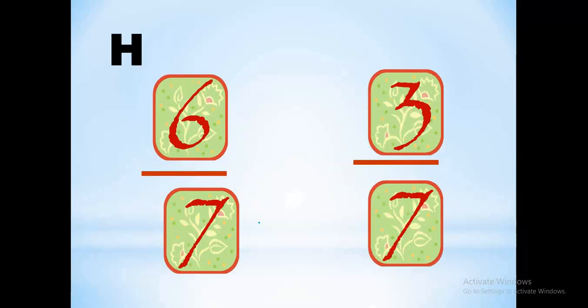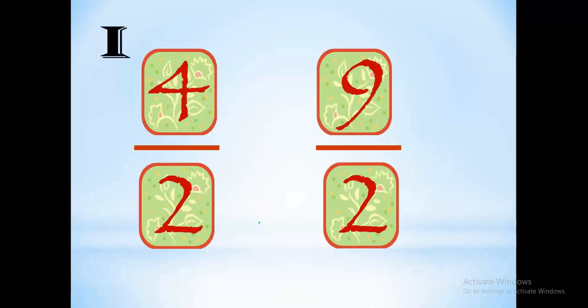For 6 over 7 and 3 over 7, 6 is the biggest so 6 over 7 is the biggest number. For 4 over 2 and 9 over 2, 9 is the highest number, so the fraction 9 over 2 is the biggest fraction.